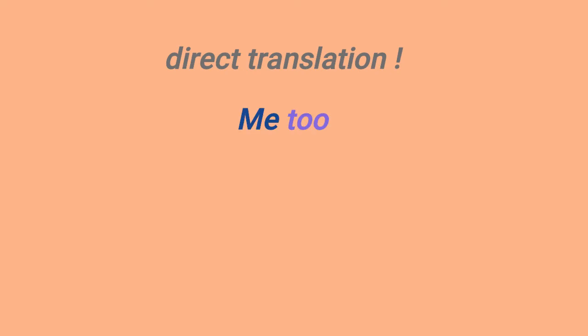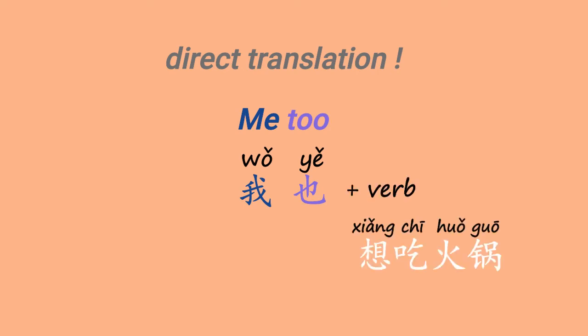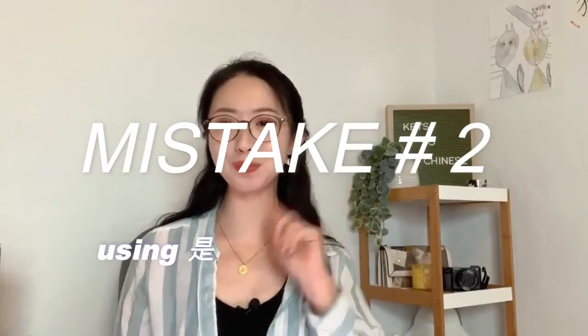When we say 'me too,' that is literally 我也. But in Chinese, we have to include the actual verb. In this case, the actual verb is 想吃火锅. Since 火锅, the object, has already been established, we can omit the object. So we can just say 我也想吃.